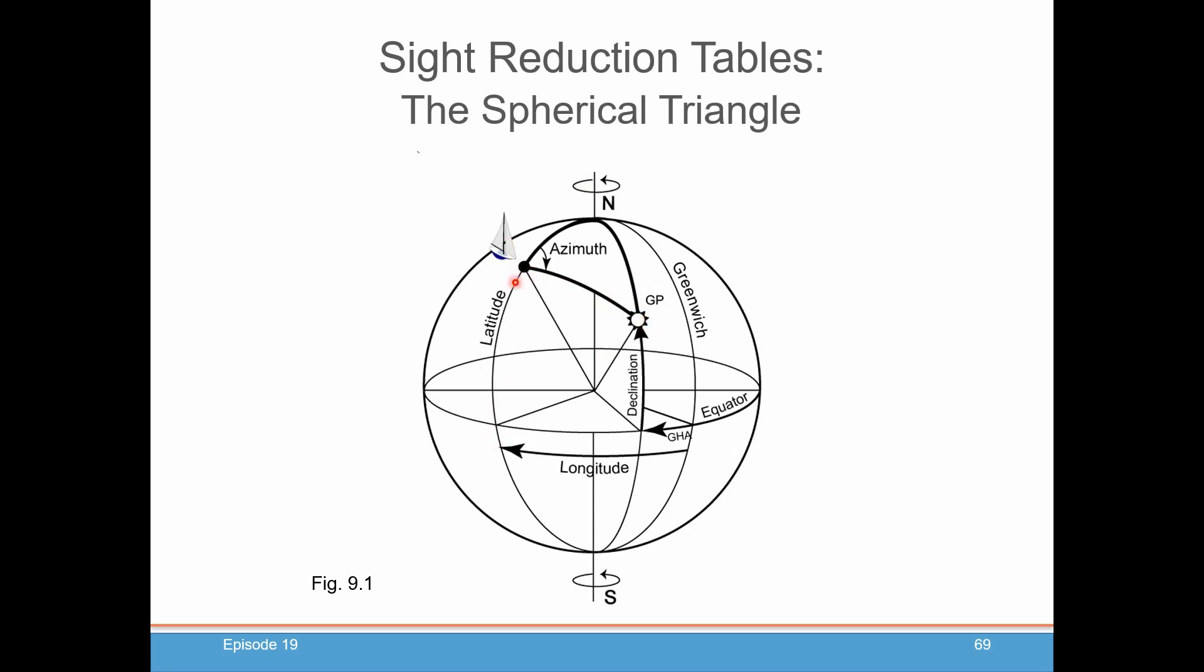So if you know your latitude and you know the declination of the object you're observing, in this case we're going to use the sun, with those two pieces of information, you can draw this little triangle here from where your boat is up to the pole that you are closest to. In this example we're closest to the North Pole. And from the sun you can draw this side of the triangle.